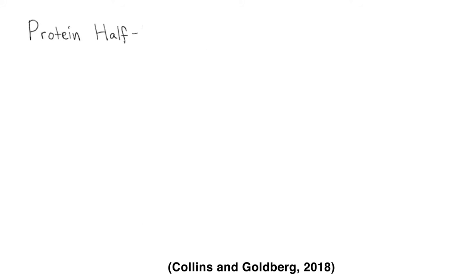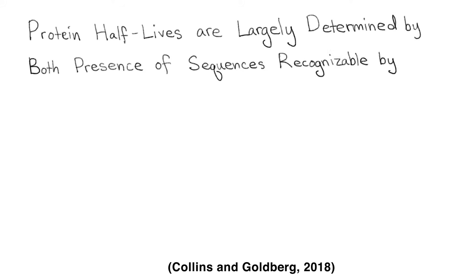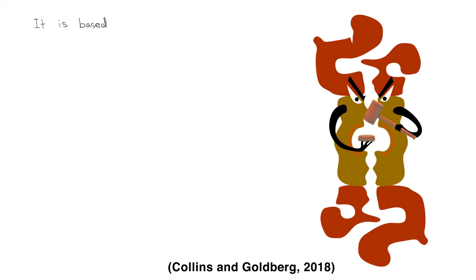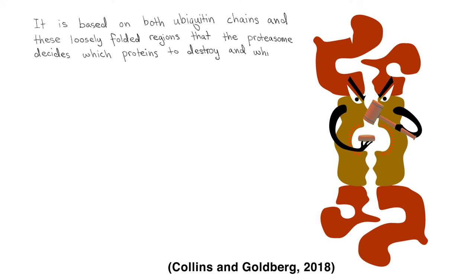Note that protein half-lives are largely determined by both presence of sequences recognizable by ubiquitin ligases and differences in folding that proteasomes can identify. It is based on both ubiquitin chains and these loosely folded regions that the proteasome decides which proteins to destroy and which to spare.